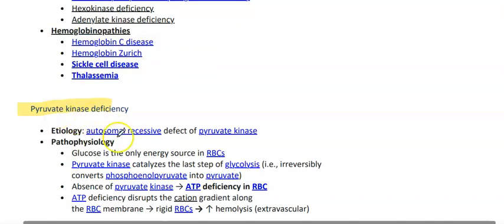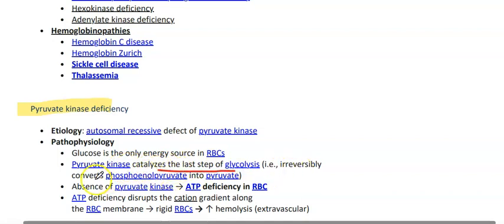Pyruvate kinase deficiency is an autosomal recessive defect of the pyruvate kinase enzyme. Glucose is the only energy source in the RBC. Pyruvate kinase catalyzes the last step of glycolysis — it irreversibly converts phosphoenolpyruvate to pyruvate. Absence of pyruvate kinase leads to deficiency of ATP in the RBC.